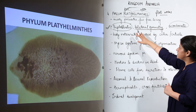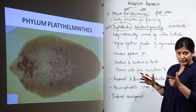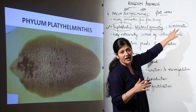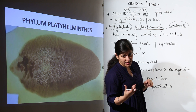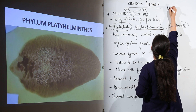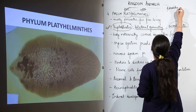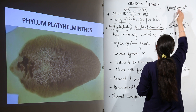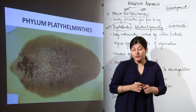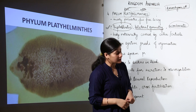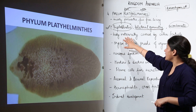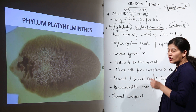When we talk about triploblastic condition, there are three layers, so we expect the organism to have a coelom. However, there is no coelom present. Instead, there are parenchymal cells secreted by the mesoderm. These parenchyma cells fill the body cavity — so whatever cavity is present inside the body is filled by parenchyma cells secreted by the mesoderm.